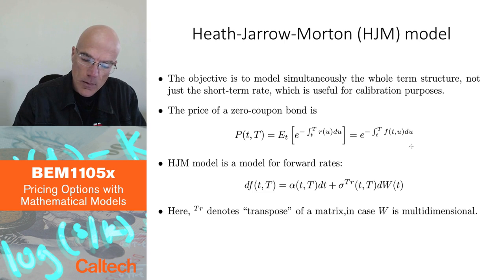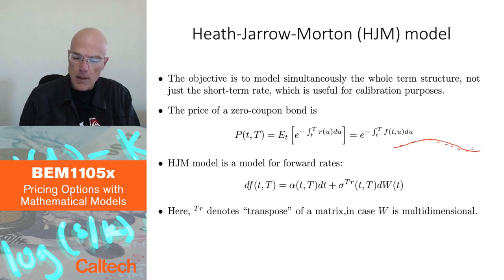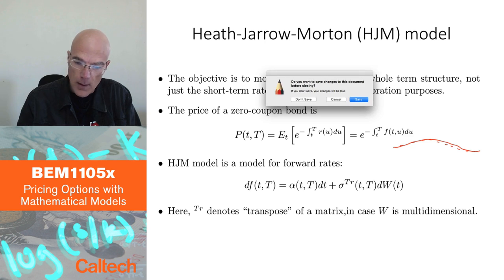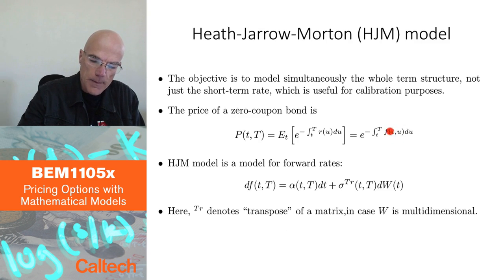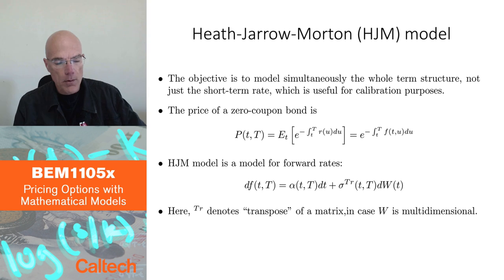In practice, again, you observe the yield curve, meaning the bond prices only for certain points. So if you look at the yield curve, which is equivalent to looking at bond prices, you get something like this. As I said before, you interpolate, extrapolate, smooth it out. So you pretend you are observing bond prices with all maturities. And once you have that, then you can recover the forward rates simply from the formula that is given here. The forward rates are this minus derivative of the log of the bond prices. So that's the difference relative to the short rate.